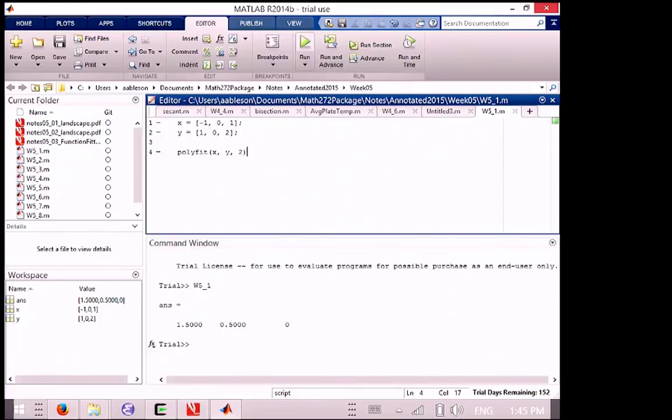Now what those three numbers are, are polynomial coefficients. What does the 1.5 represent? I've got a quadratic, the 1.5 represents what? The A coefficient. Which of the constant, linear, or quadratic? Quadratic, right. So we just said highest order to lowest order. So this is quadratic, linear, constant. So that's it, it did a fit for us.